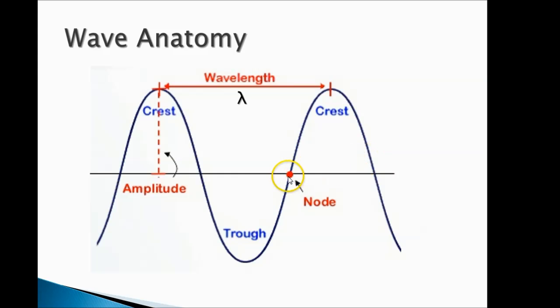The nodes are the points of a standing wave where you get very little movement. Right here is a node, right here would be a node, and right here would be the node.